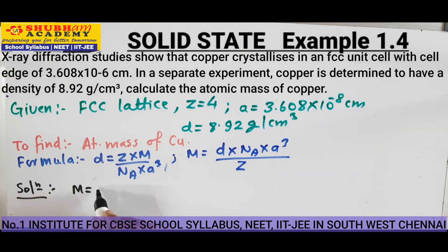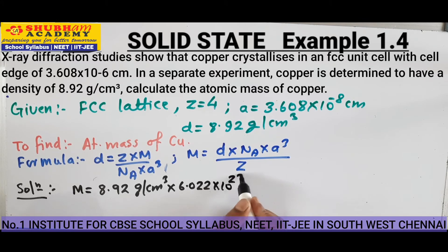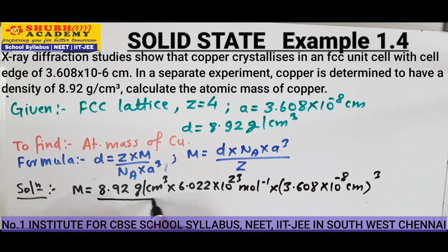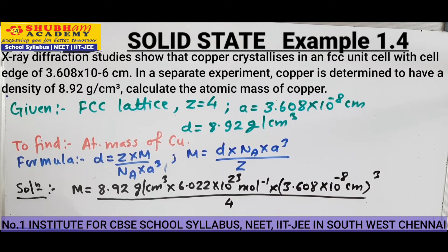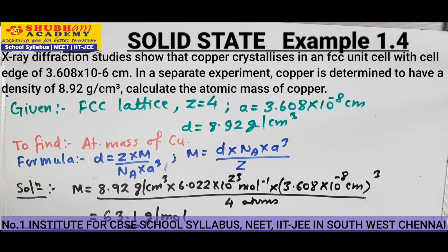Substituting the values: M equals 8.92 gram per centimeter cube, into 6.022 into 10 to the power 23 mole inverse, into 3.608 into 10 to the power minus 8 centimeter whole cube, divided by 4. On simplifying, we get 63.1 gram per mole. So this is the molecular mass of copper.